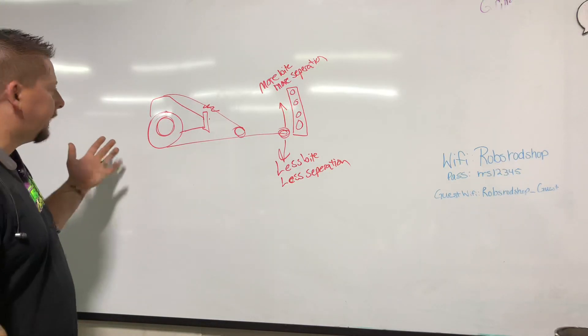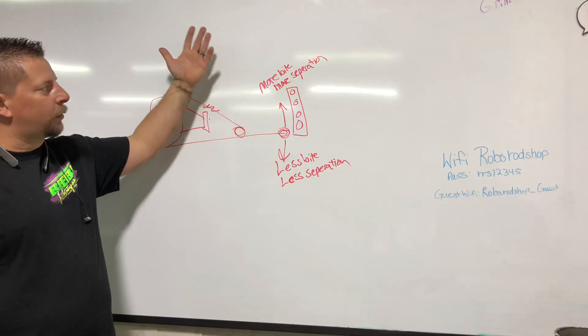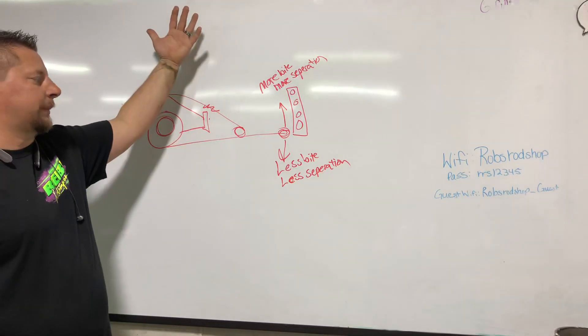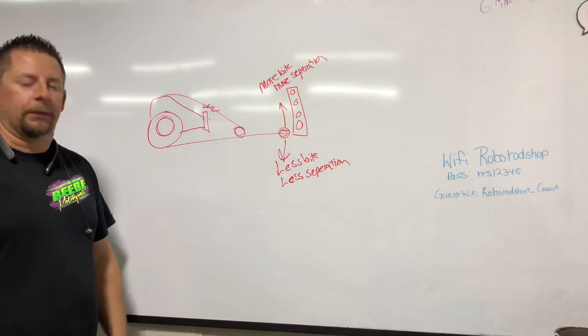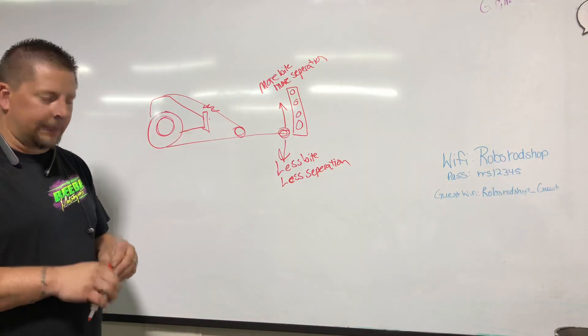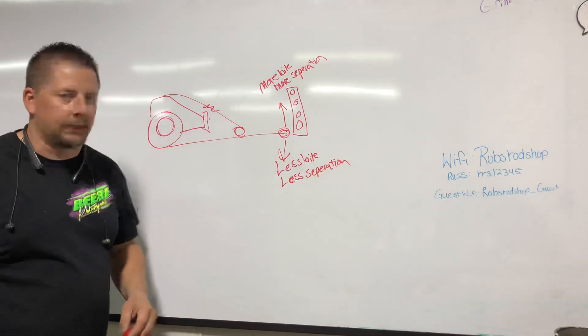But either way, this is basically it. Move it up for more bite, down for less bite. Up for more separation, down for less separation. And you should be able to help your car go down the racetrack. Either way, I'm Rob Dean. You guys have a good evening.